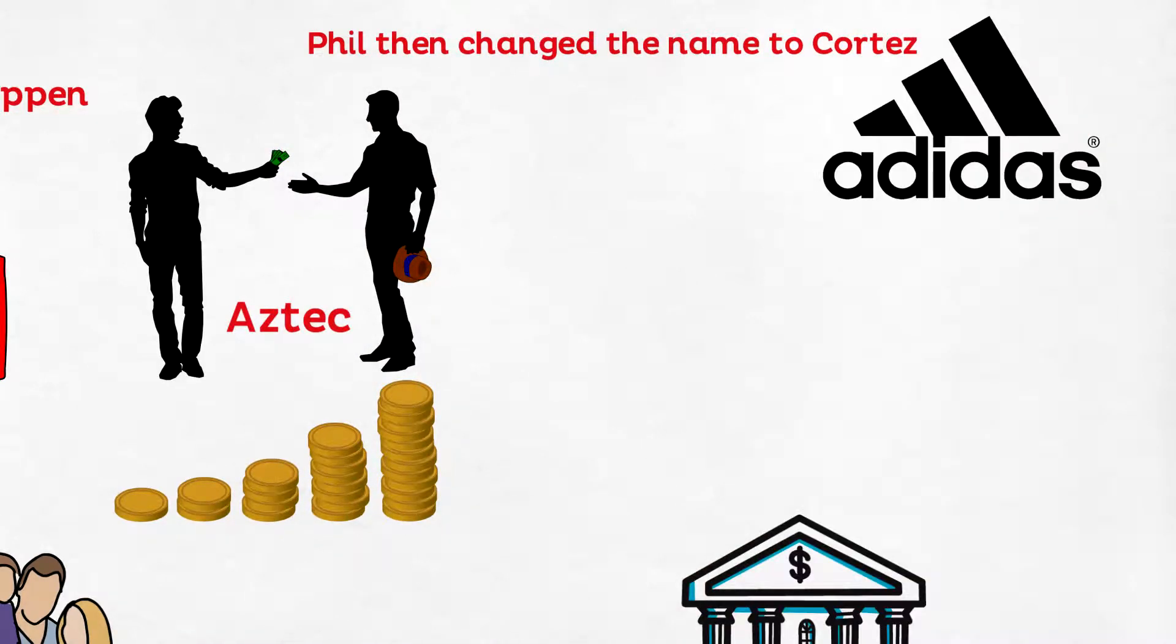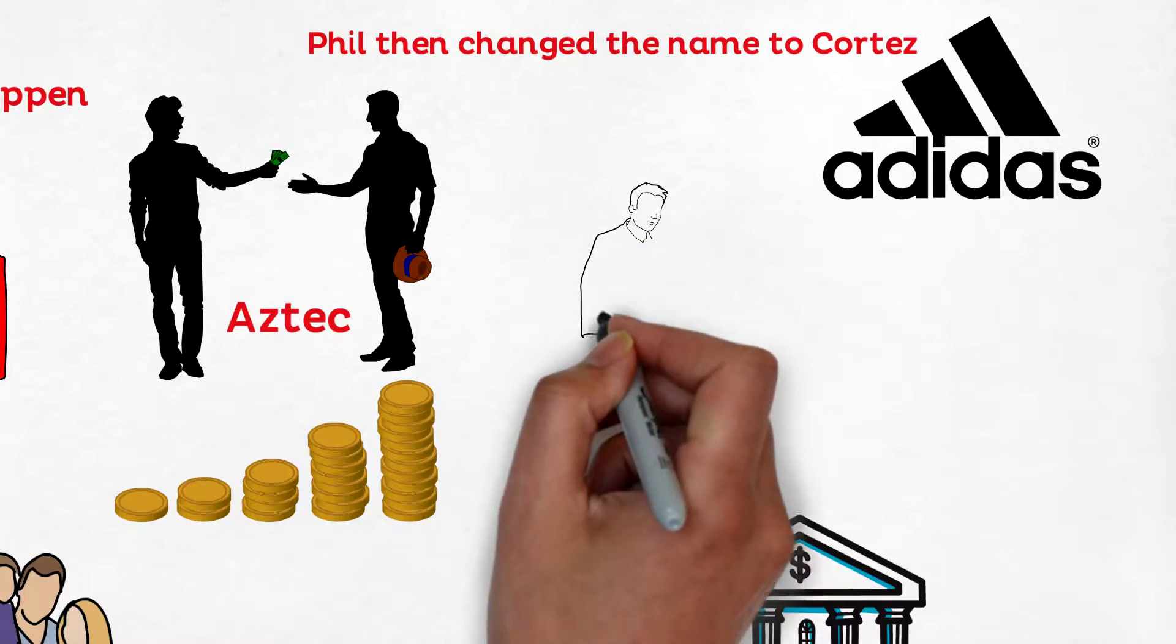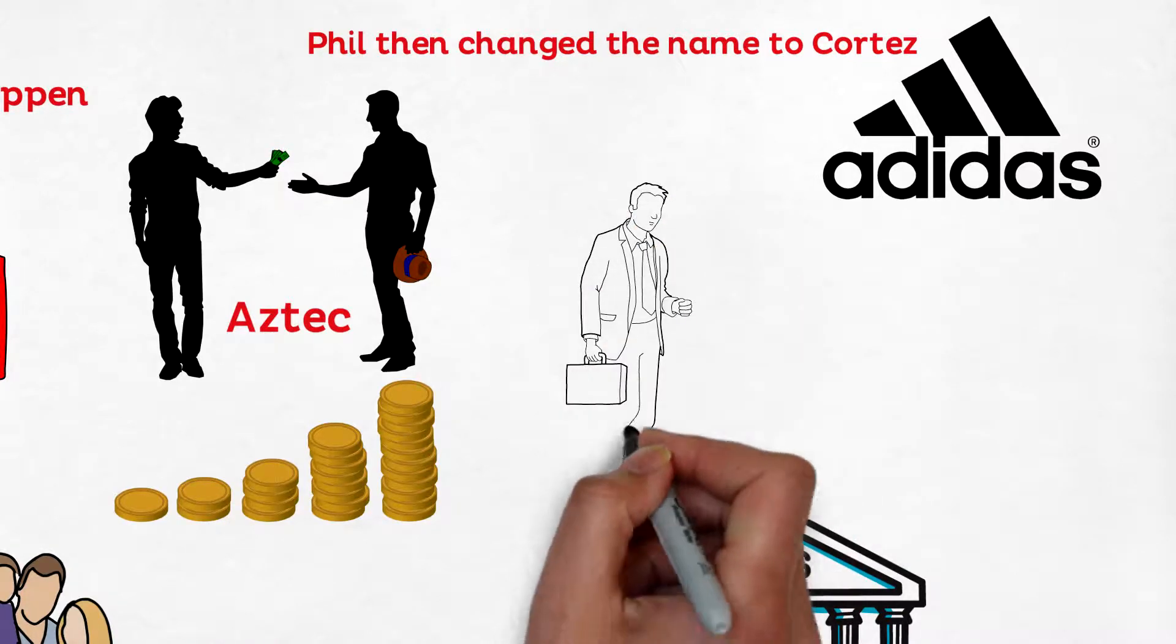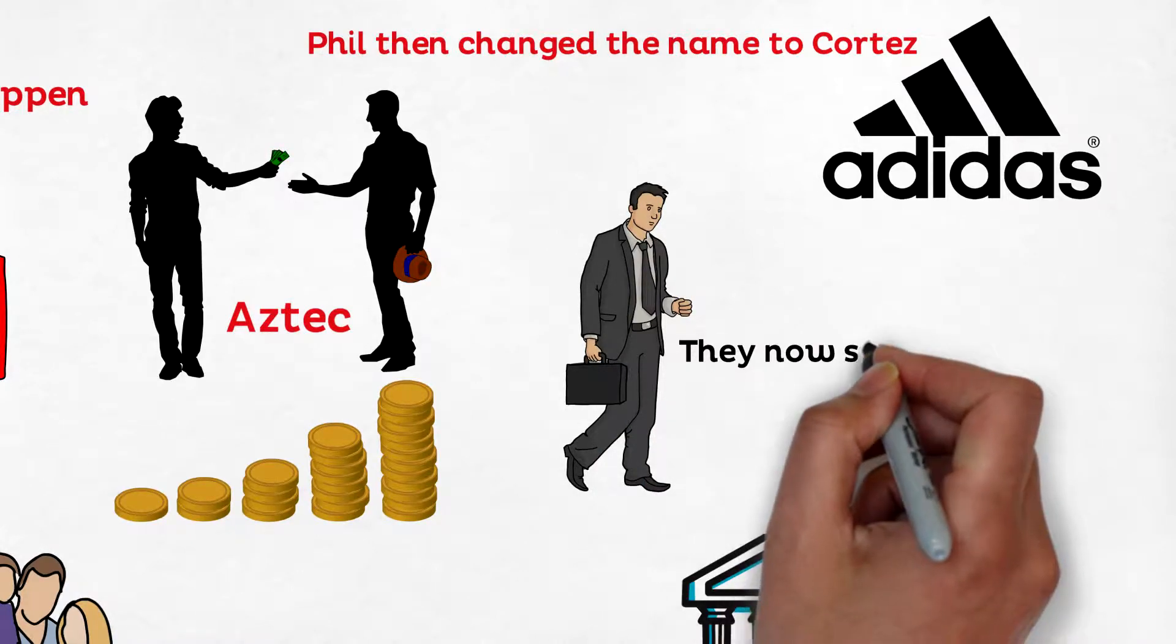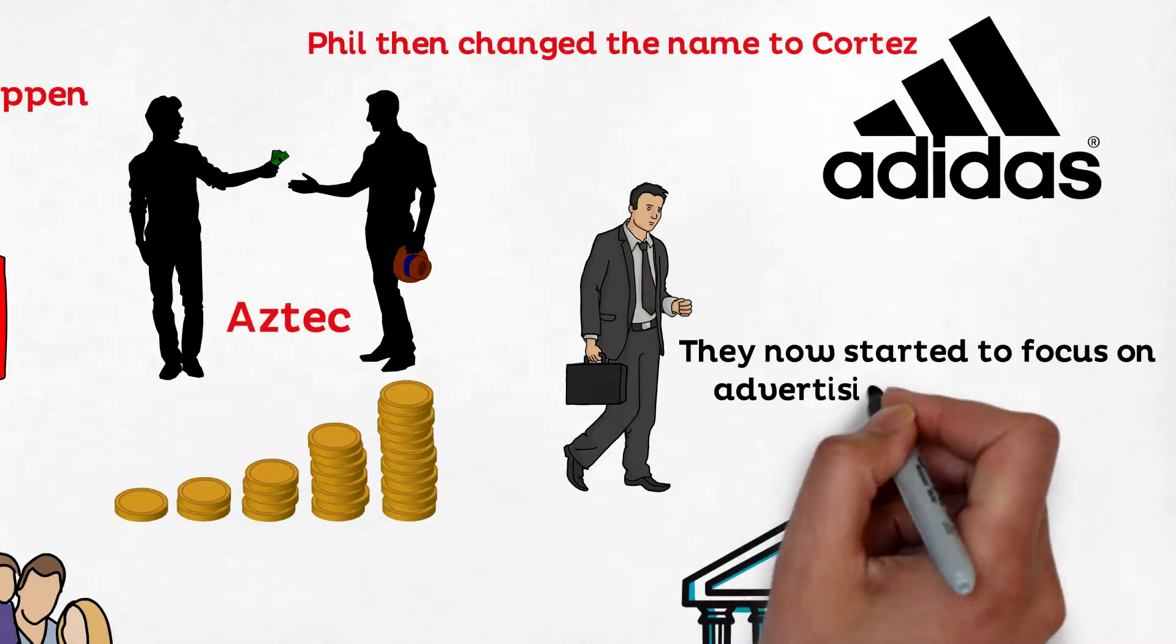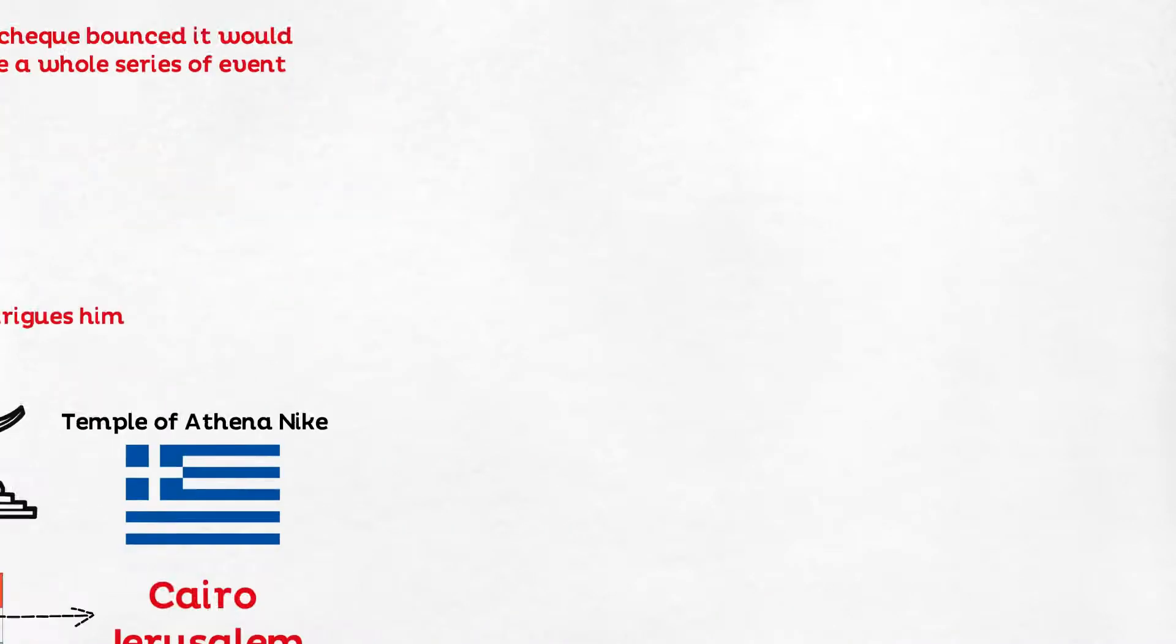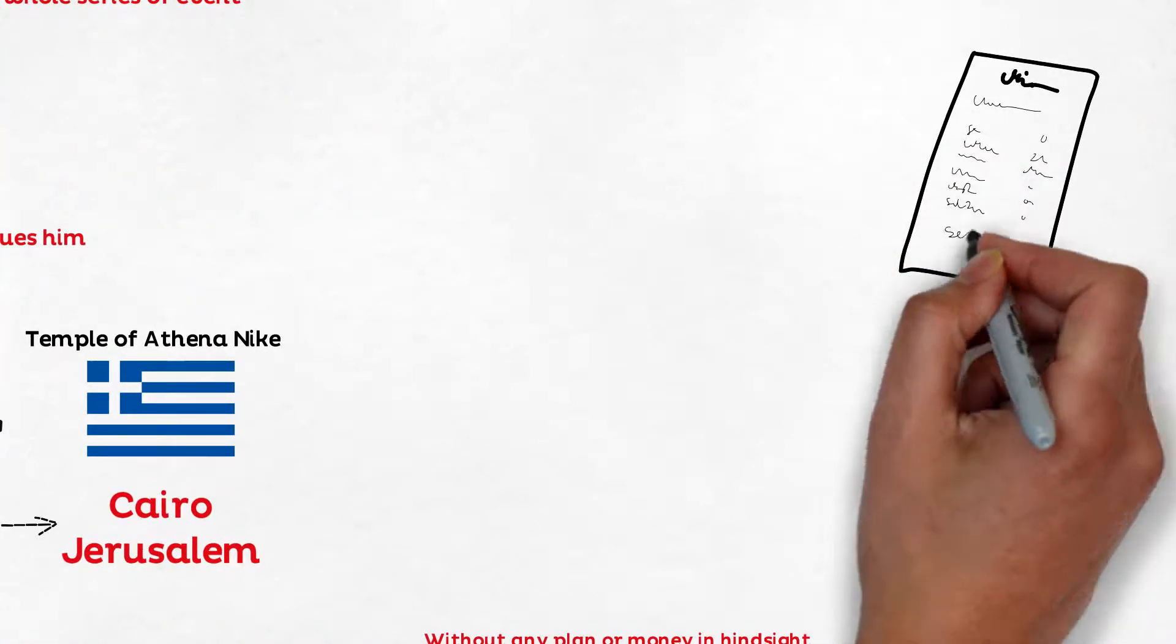Phil started working twice as hard, hired extra staff and office. It was again a successful operation but again running on thin ice with the bank loan. They now started to focus on advertising and branding. They also got a Japanese trading company called NISO to invest in Blue Ribbon.